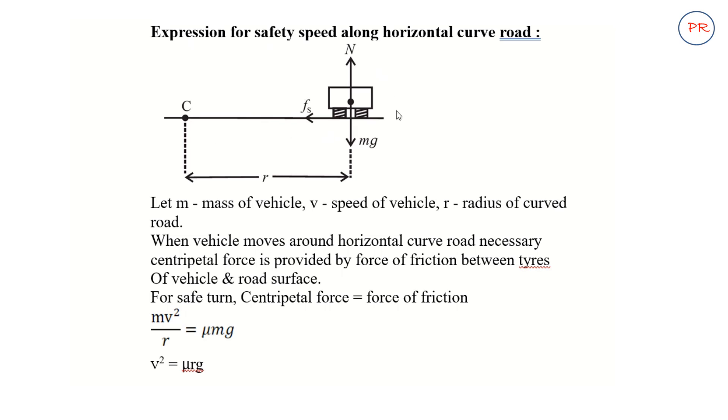Here, you will be able to see a vehicle. Its weight mg is acting downward and normal reaction is acting upward. The force of static friction is acting parallel to the surface of the road. R is the radius of curvature.